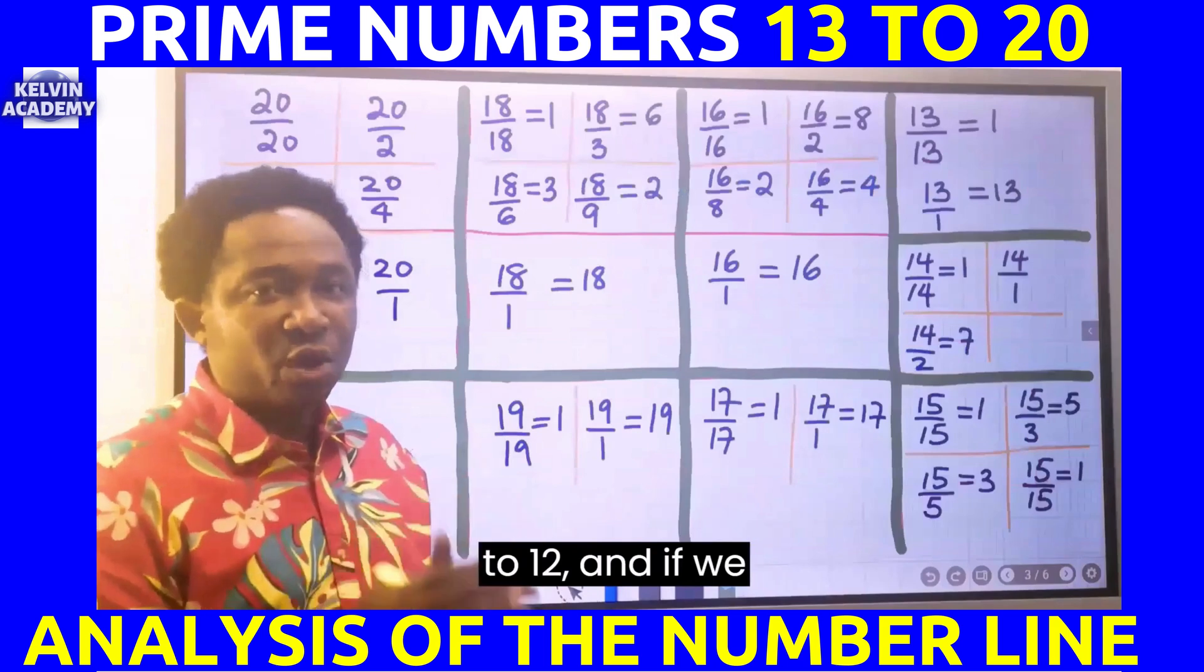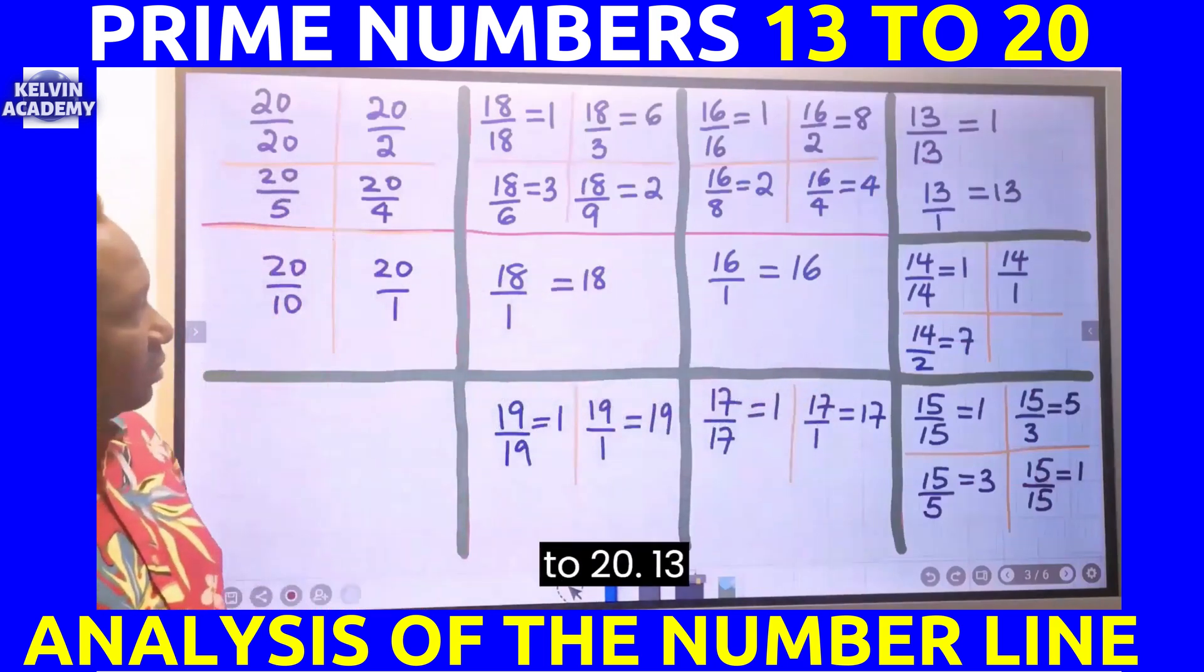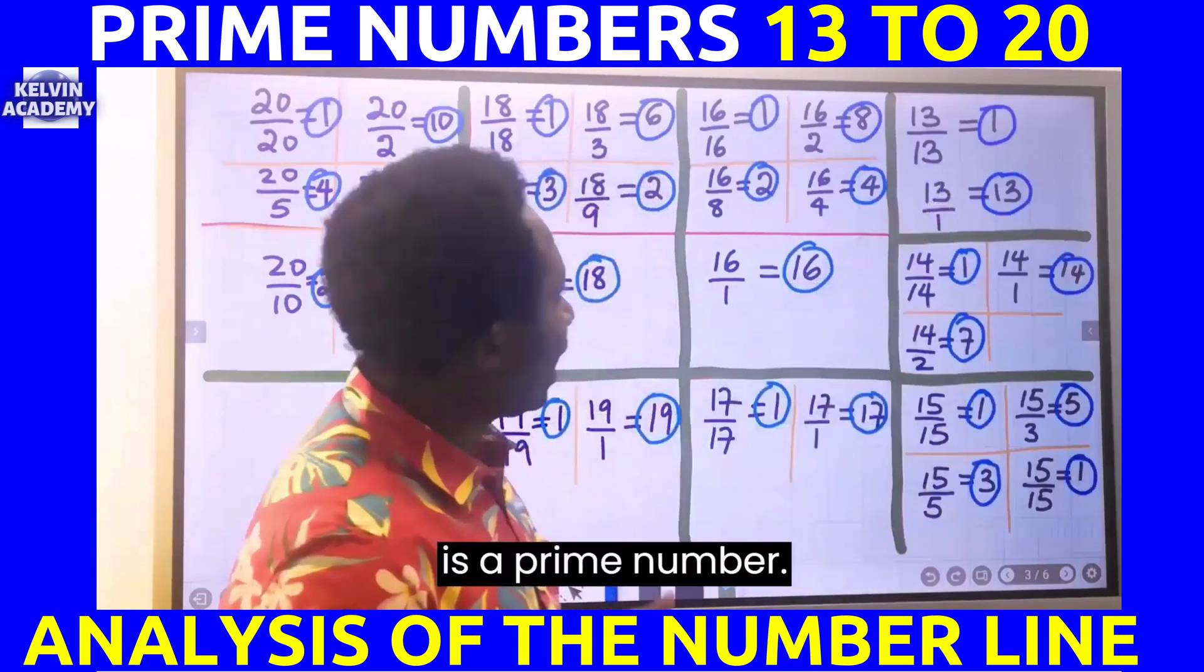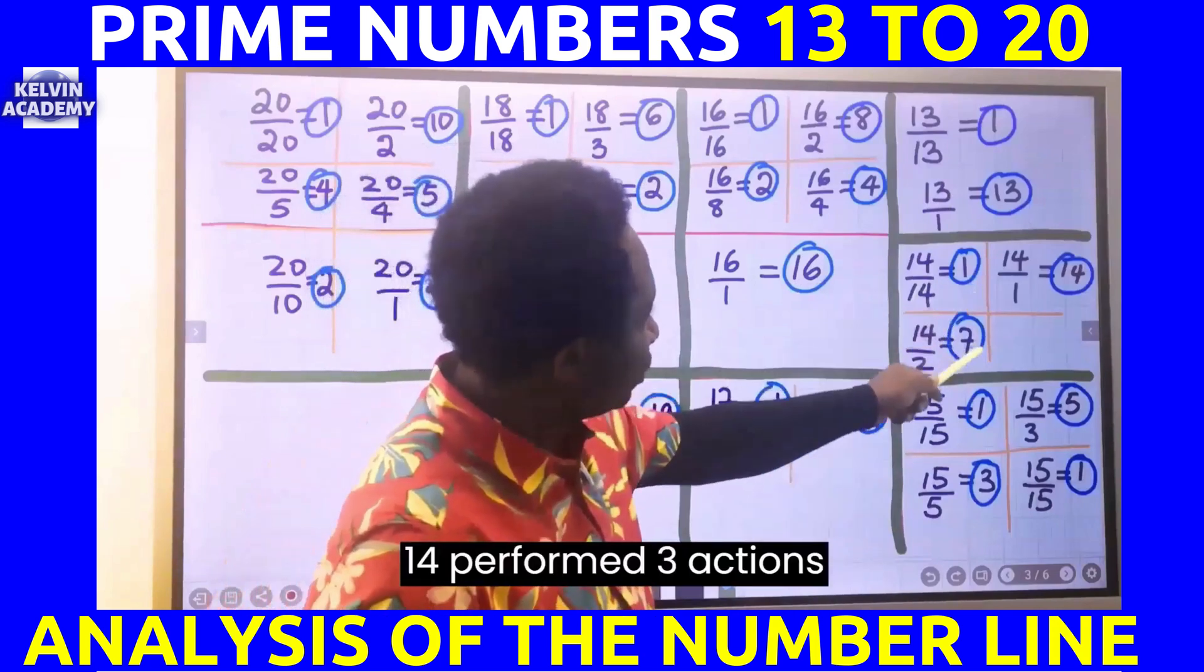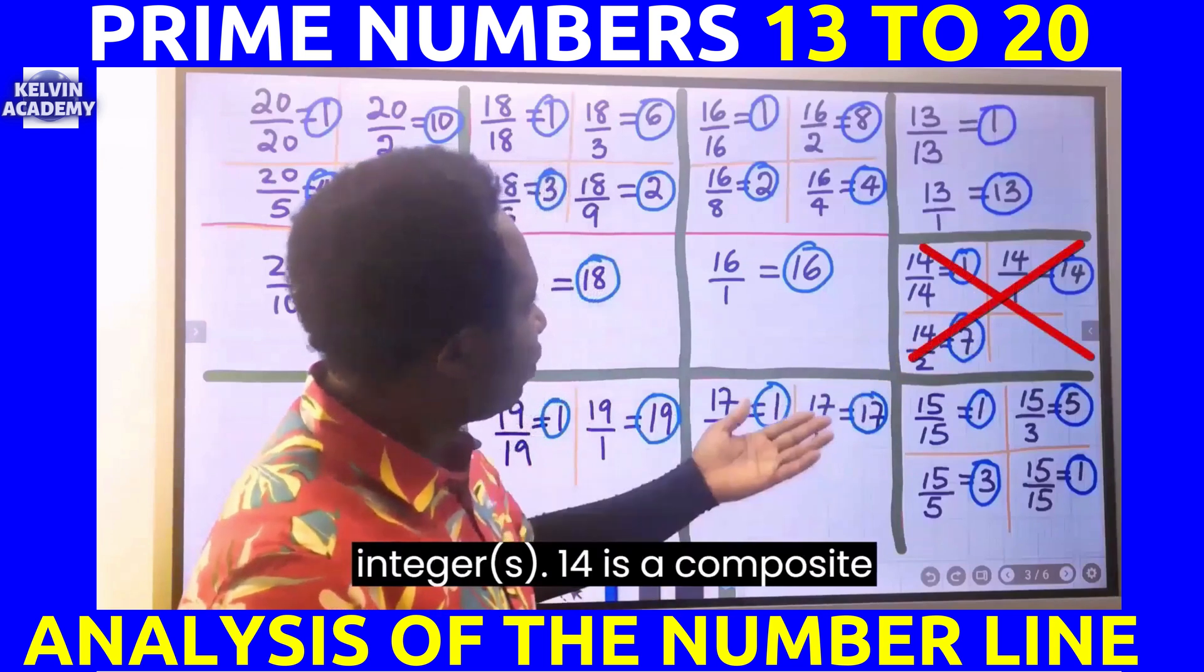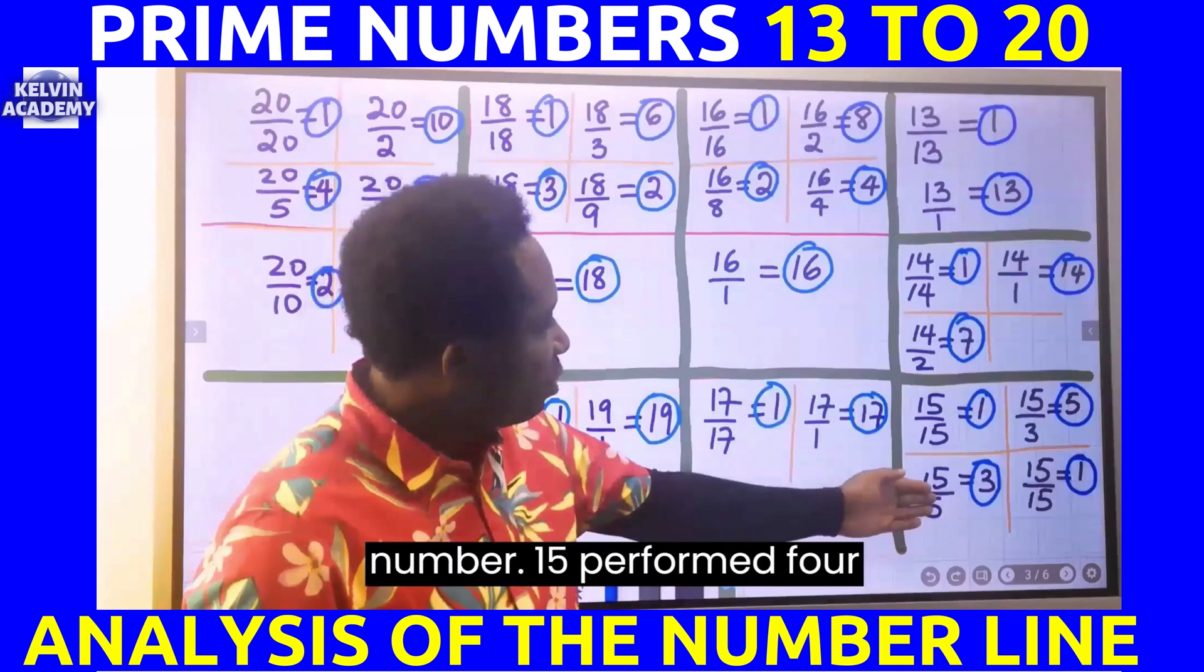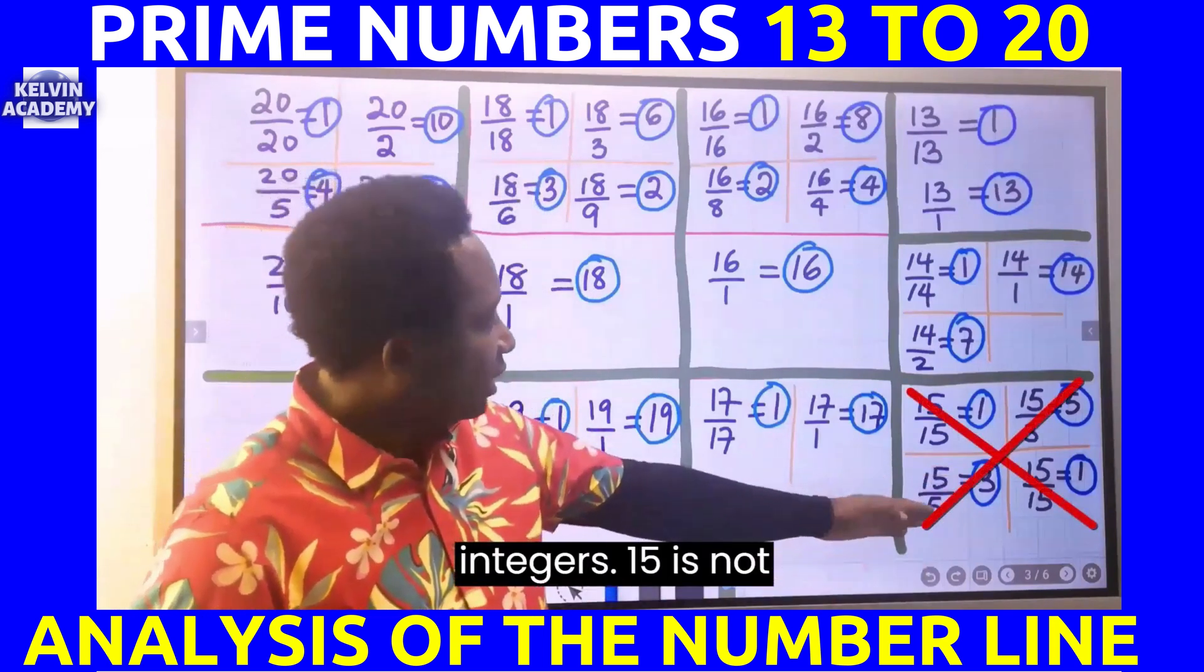If we consider from 13 up to 20, 13 performed two actions which is a prime number. 14 performed three actions that returned an integer, so 14 is a composite number. 15 performed four actions that returned integers, so 15 is not a prime number, it is a composite number.